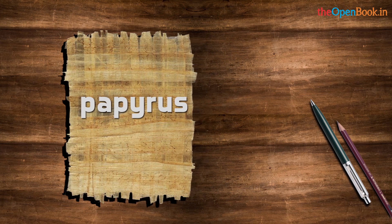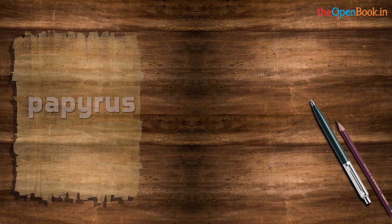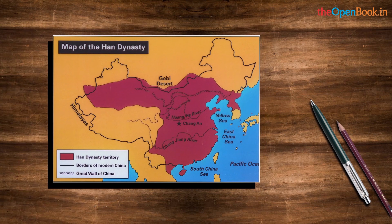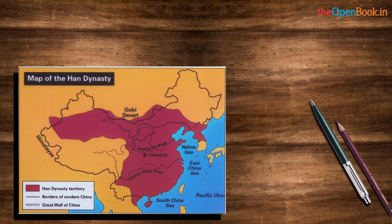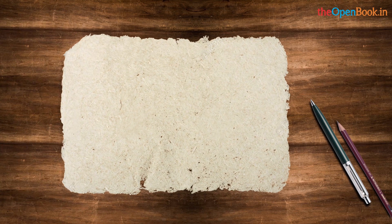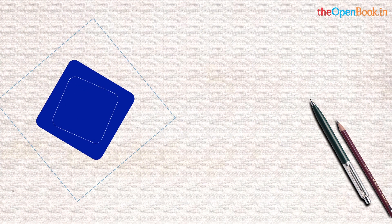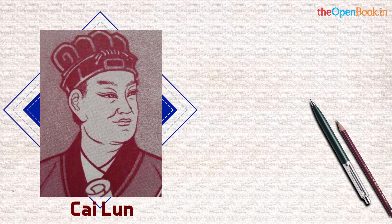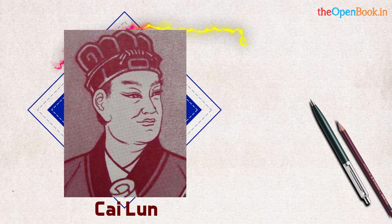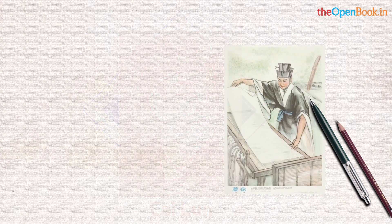Its origin can be traced back to the Han dynasty. The type of paper they made was from hemp, and it was coarse, uneven, and thick. This was known to man from excavations from a Han tomb. Sometime in 104 AD, Cai Lun in the Han dynasty tried his hand at making paper.